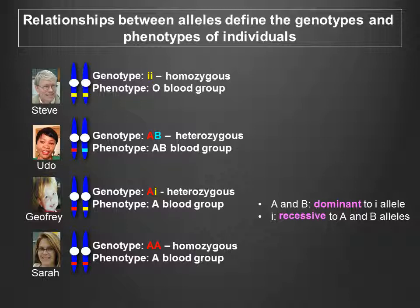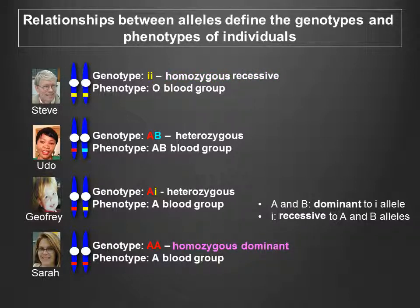Homozygous individuals like myself with two copies of a recessive allele are said to be homozygous recessive. Likewise, homozygous individuals like Sarah with two copies of a dominant allele are homozygous dominant.